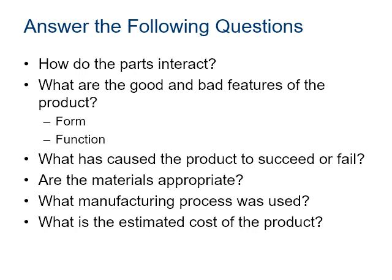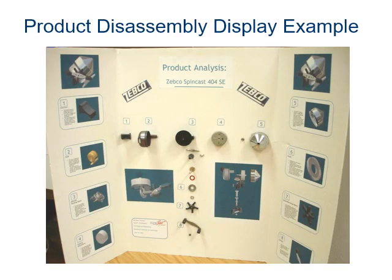Whatever the original reason a product is being reverse engineered, it's usually a judgment on what was working and what wasn't, and how to make it better. Answering important questions will help you determine how to improve the product or identify what was wrong with it. And this is a nice example of a way you could display all of the information for a reverse engineered product.